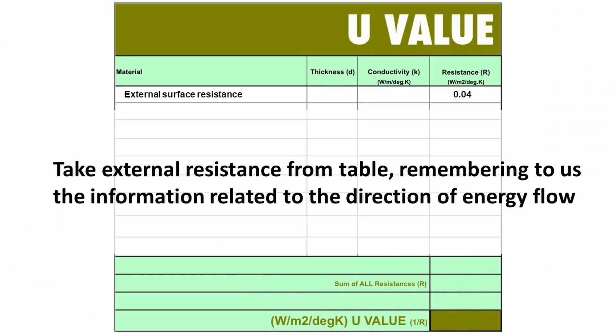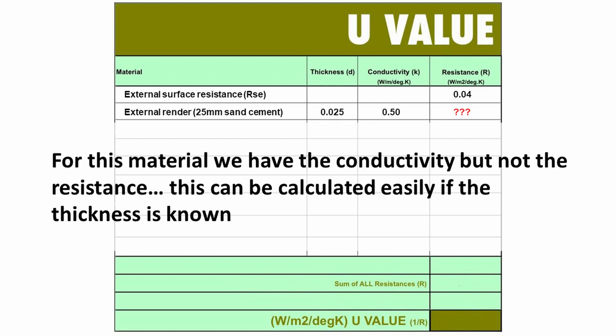And because it's a wall, we can start plugging information into our table. We can add in the external surface resistance. And the next layer that we have in our construction is an external render and we have a thickness for that.